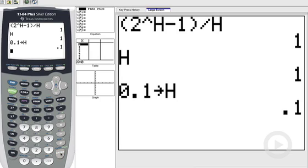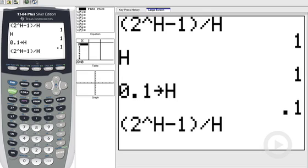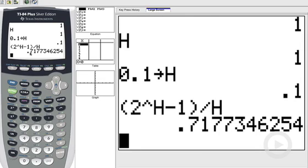And then, instead of typing this whole expression in all over again, I'll do second entry. And you just keep hitting second entry and it goes backwards through the entries that you've just executed. Now hit this again, and now notice I'm getting 0.7177. This is now the new value of the difference quotient for h equals 0.1.